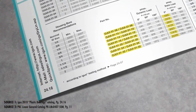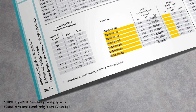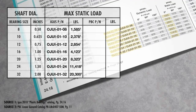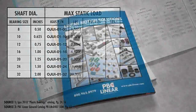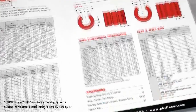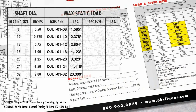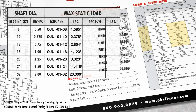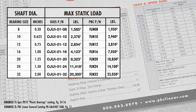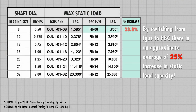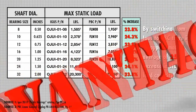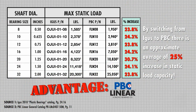First, let's compare the static load of the igus drylin R bearing to the PBC simplicity bearing by using values directly from the catalogs. The table shows that the static load values for PBC's products are larger than the equivalently sized igus bearing. By switching from igus to PBC, there is an approximate average of 25% increase in static load capacity.